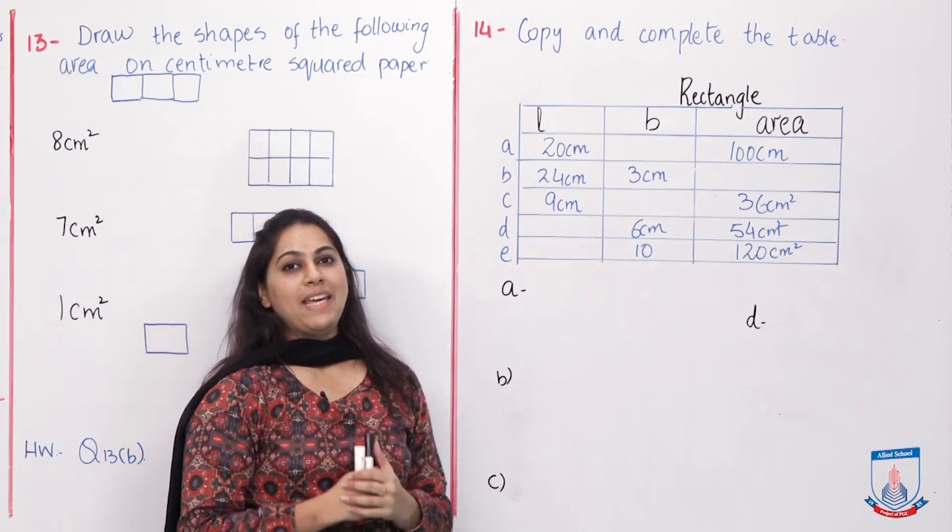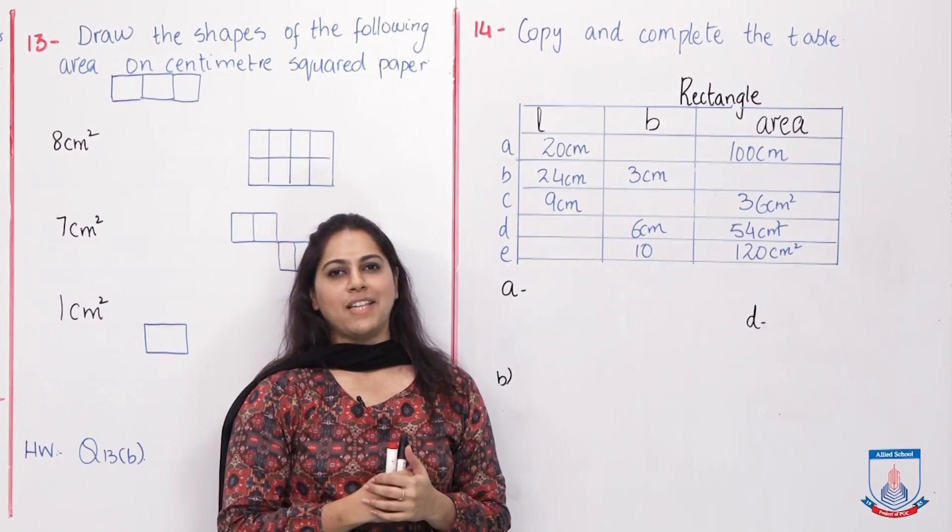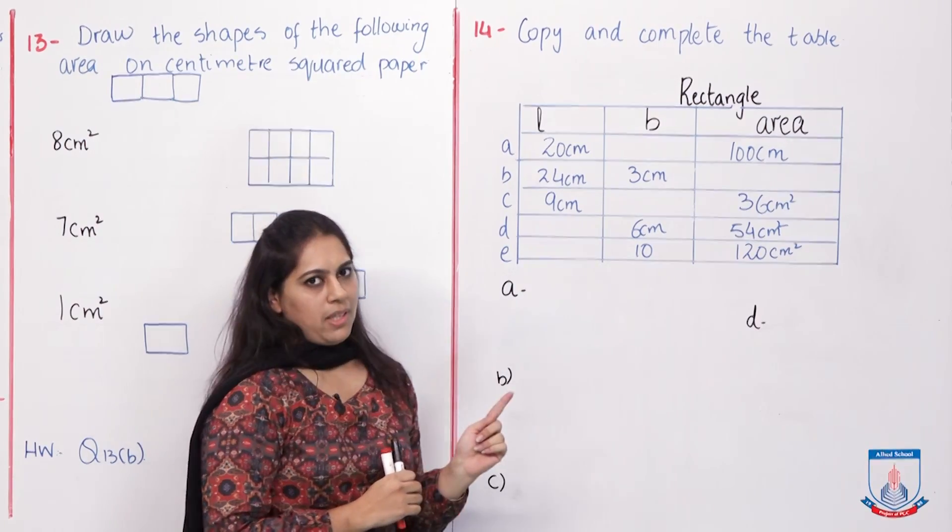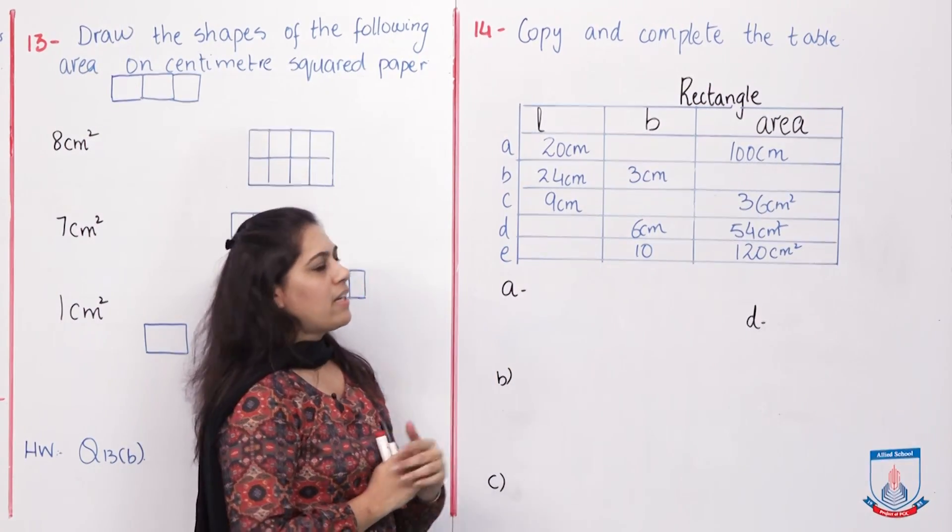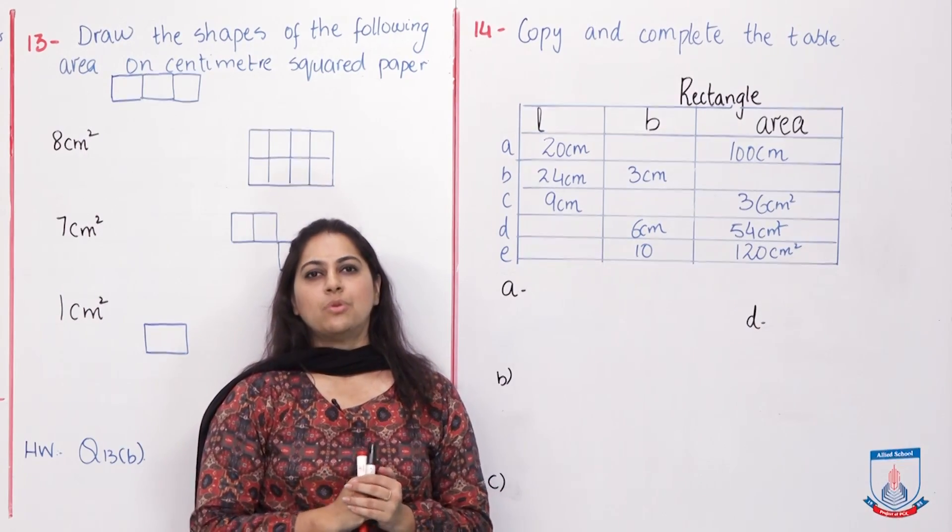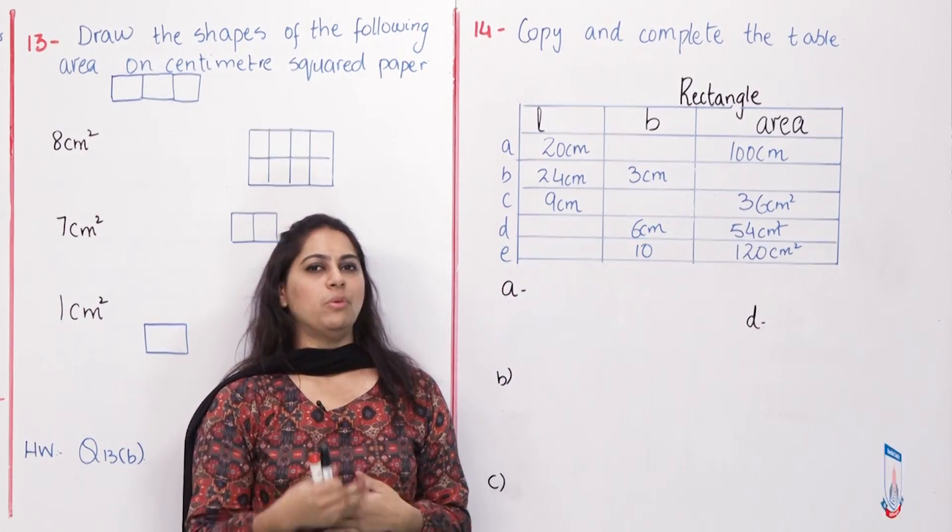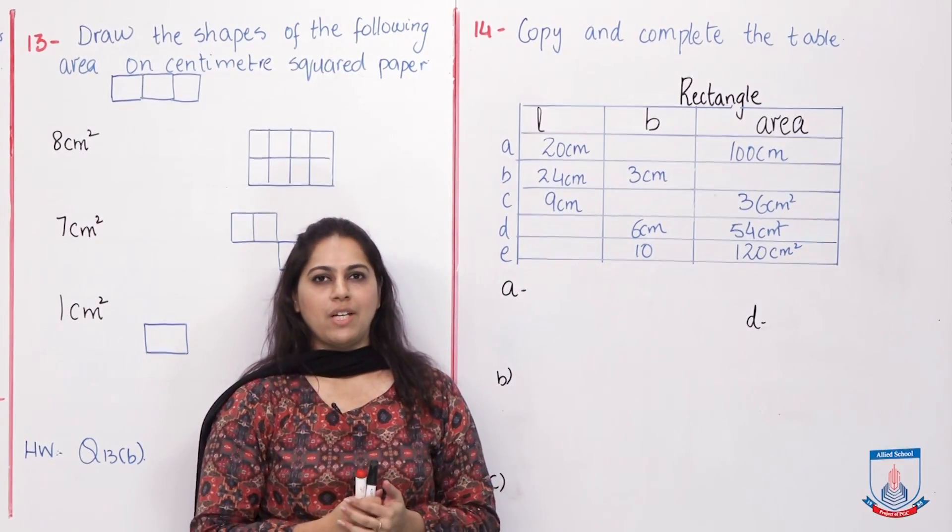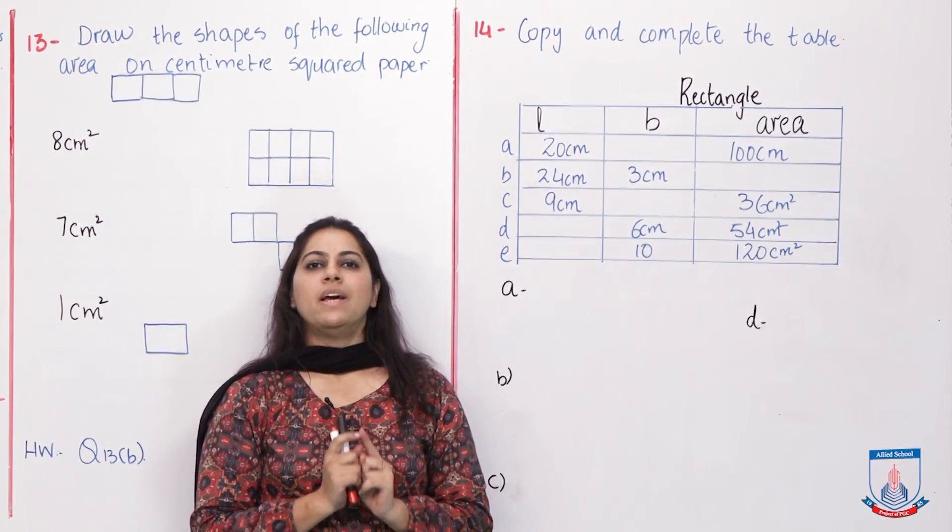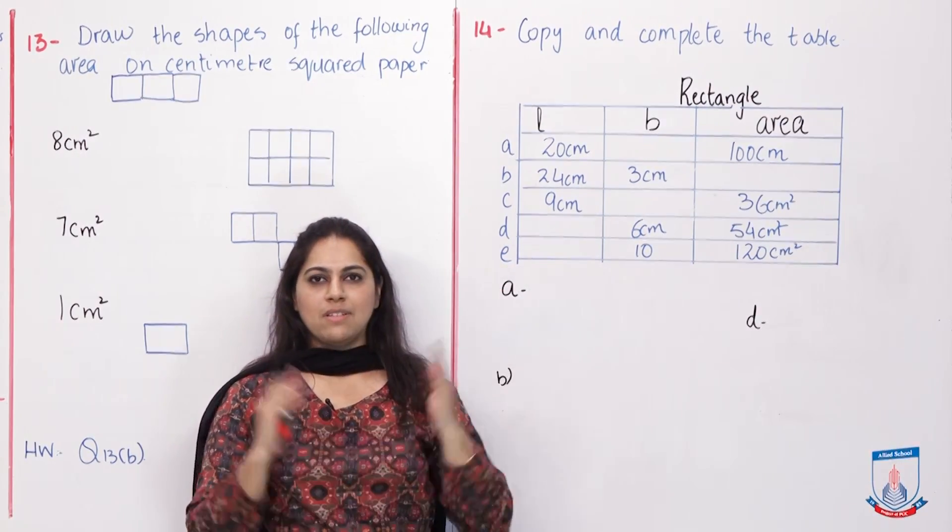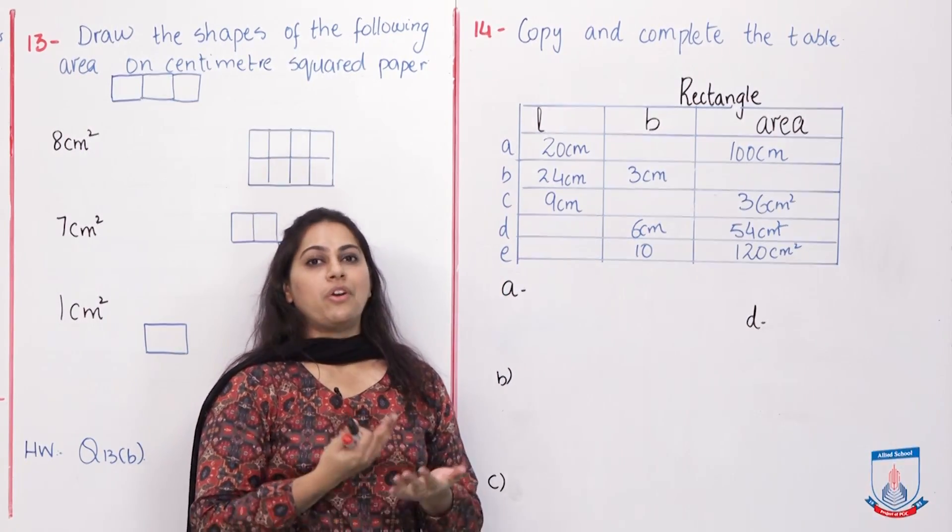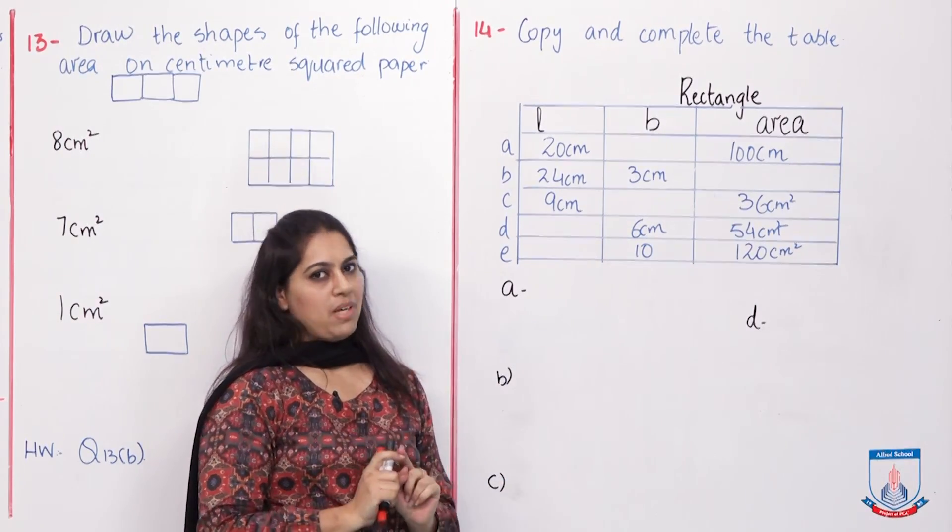Board 4, question number 14, copy and complete the table. I think these questions are very interesting because you get a challenging question. This is a rectangle. First of all, let's recall the properties of rectangle. Is rectangle the same as square? We will not go into the debate. I want to recall that all the sides of square are equal. What properties are the same with rectangle? Exactly, opposite sides are equal. Now, you have to imagine the shape of rectangle.